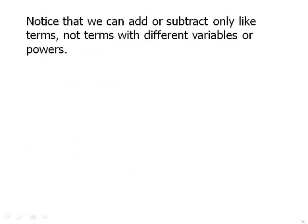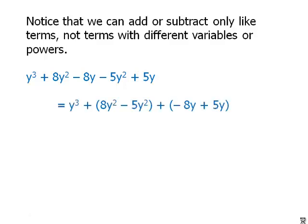Notice that we can add or subtract only like terms, not terms with different variables or powers. So if we look at this expression, we can't just add everything together because what we have here are different powers of y. So we have to group the terms by the like term, by the powers of y. So the cubic, y cubed, that's going to be by itself. We group the two quadratic terms and the two linear terms. And then within those parentheses, within those groupings, we can simplify. So we get down to this simplified expression.